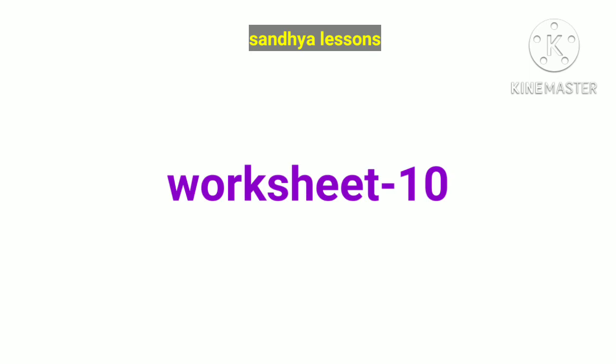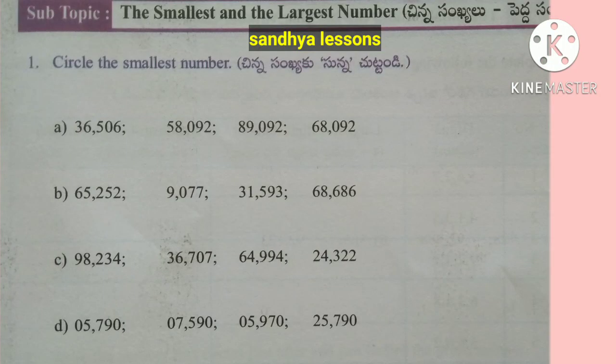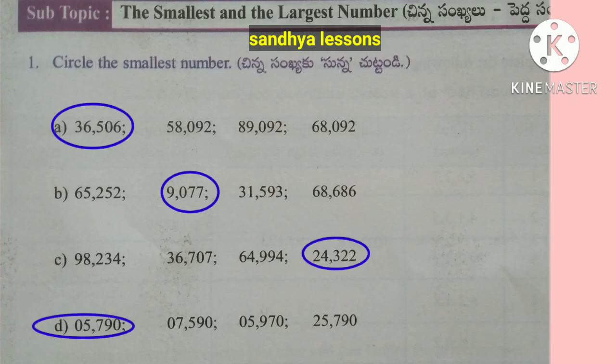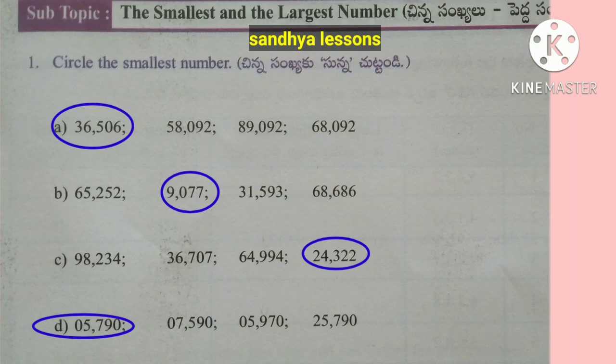Worksheet 10. First question: circle the smallest number. Smallest number in group A is 36,506. Smallest number in group B is 9,077. Smallest number in group C is 24,322. Smallest number in group D is 5,790.